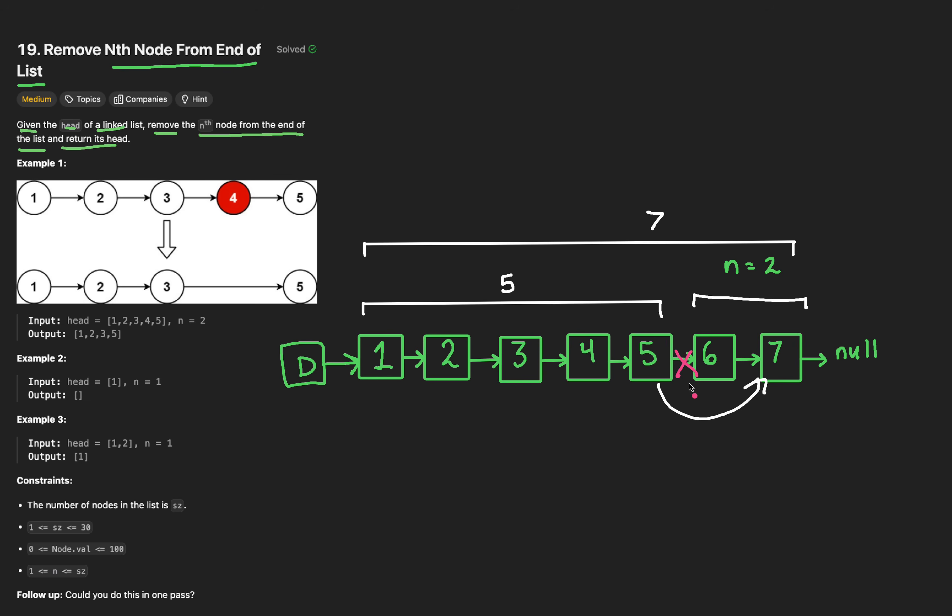In retrospect, we wanted a pointer at the L minus nth node. Very cool observation. The last thing we want to do is return the head. Which, by the way, is node 1. Thank goodness for our dummy node. And we can simply return the next node after the dummy. This is our answer. This is what we return.